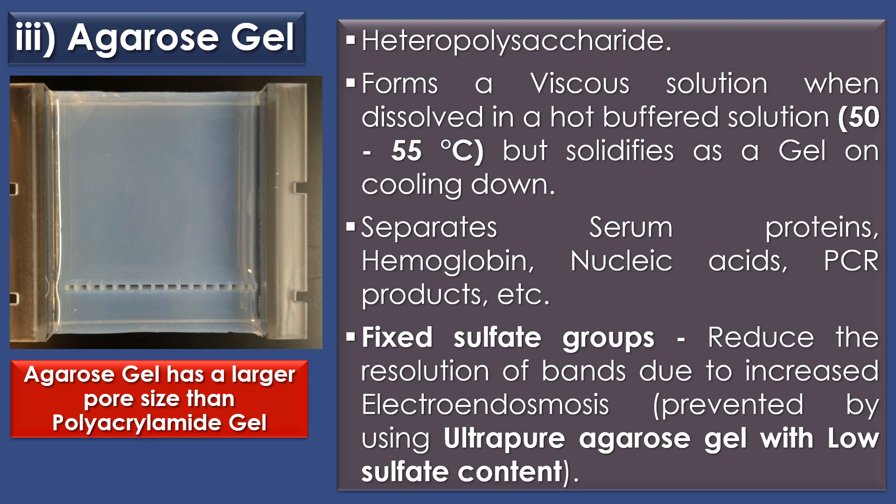The third support medium is agarose gel. Agarose is a type of heteropolysaccharide and forms a viscous solution when dissolved in a hot buffered solution, but solidifies as a gel on cooling. Agarose separates serum proteins, hemoglobin, nucleic acids, polymerase chain reaction products, etc. Sulfate groups present in agarose can reduce the resolution of bands due to increased electroendosmosis; this can be prevented by using ultra-pure agarose gel with low sulfate content.